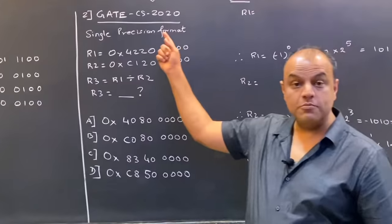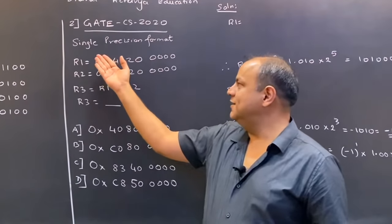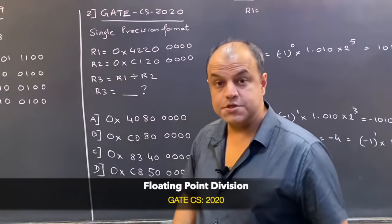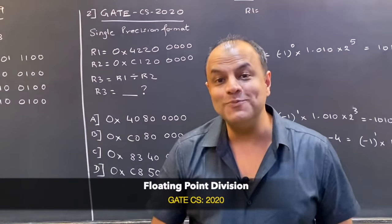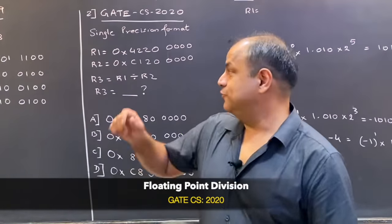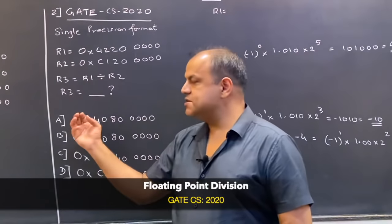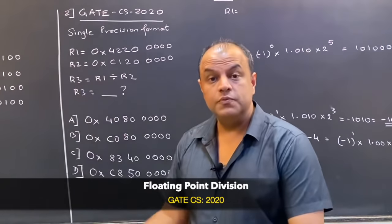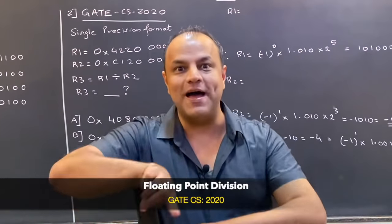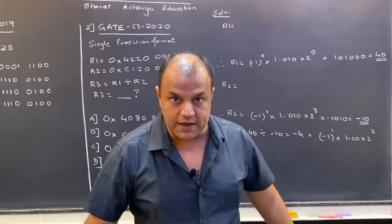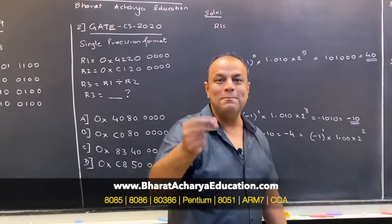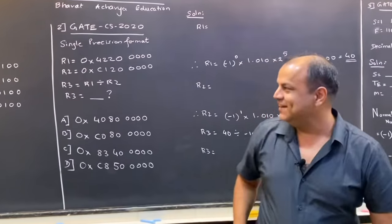The next question is from 2020. This is a tricky one — they have given you two registers which contain floating point numbers, but not in floating point format; they're in hexadecimal format. A third register is basically a division of these two, so you've got to find out what the answer is — and again, not in floating point; you've got to get the answer back into hexadecimal. This appears to be a very big calculation, but I'm going to show you how to get the answer within a minute.